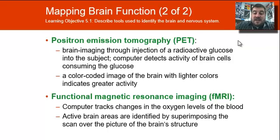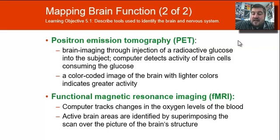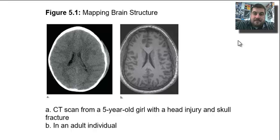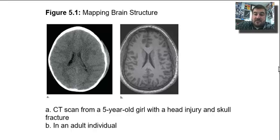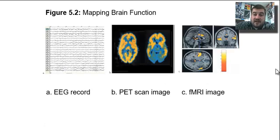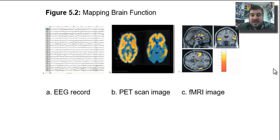The fMRI scan is identified by putting the scan over the picture of the brain structure — it's kind of like a video, a functional MRI. Here you can see a CT scan: on the left is a five-year-old girl with a head injury, and on the right is normal, showing a little brain swelling. An EEG record gives you electrical pulses, and there's a PET scan image and an fMRI image as well.